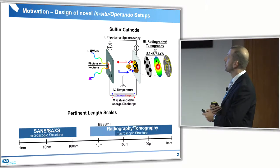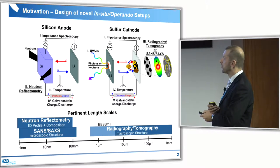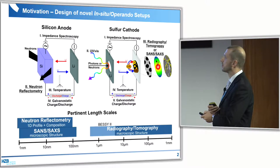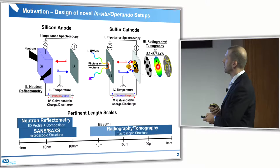We do this research on the cathode side but also on the anode side with silicon anodes, though that will not be part of this talk today. On the anode side we look at the lithiation and delithiation processes of silicon, also in operando mode with different measurements, so we can get information across all pertinent length scales.